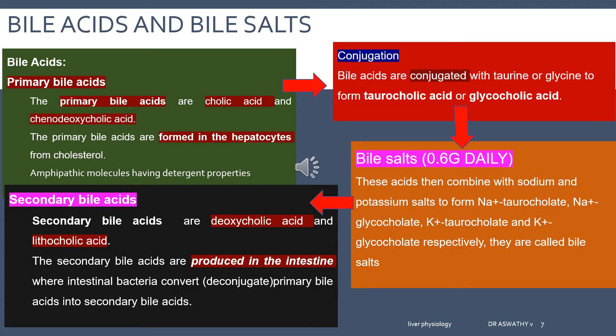Through the portal circulation — which ends in the liver — all these bile acids reach the liver again. The hepatocytes take up these bile acids from the portal blood and again the cycle repeats — that is called enterohepatic circulation. We will discuss it in detail in the coming slides.